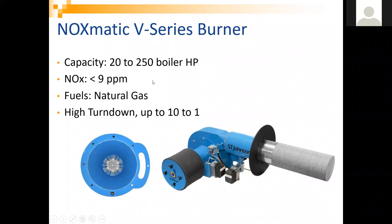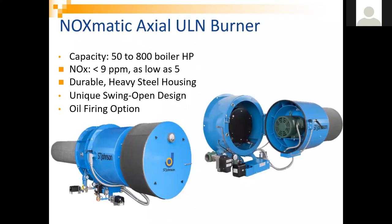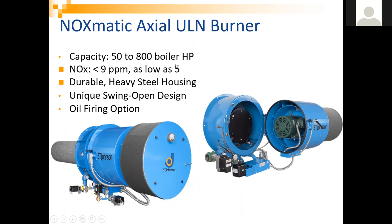The NOx-O-Matic V-Series achieves sub-9 PPM, and we have done sub-7 PPM on this burner, with an 8-to-1 or 10-to-1 turn down — a very high turn down burner. Higher turn down means the boiler cycles less, turning on and off less, which reduces wear and tear on burners, motors, electrical components, starters, VFDs, and igniters. The NOx-O-Matic axial ULN burner is hinged for ease of service — you can change out the element and motors directly through the hinged port. We can hit sub-5 PPM with this burner, which can also fire oil, going up to 800 horsepower and even up to 1,200 or 1,300 horsepower.